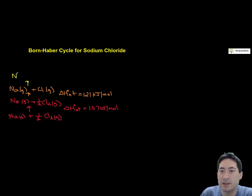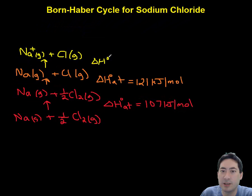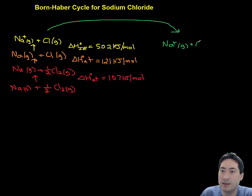Then we need to break the chlorine double bond and get the chlorine to an atom. Next we need to turn these things into ions. So the ionization energy of sodium. And then get chlorine to an ion. That actually releases energy. That's an electron affinity.